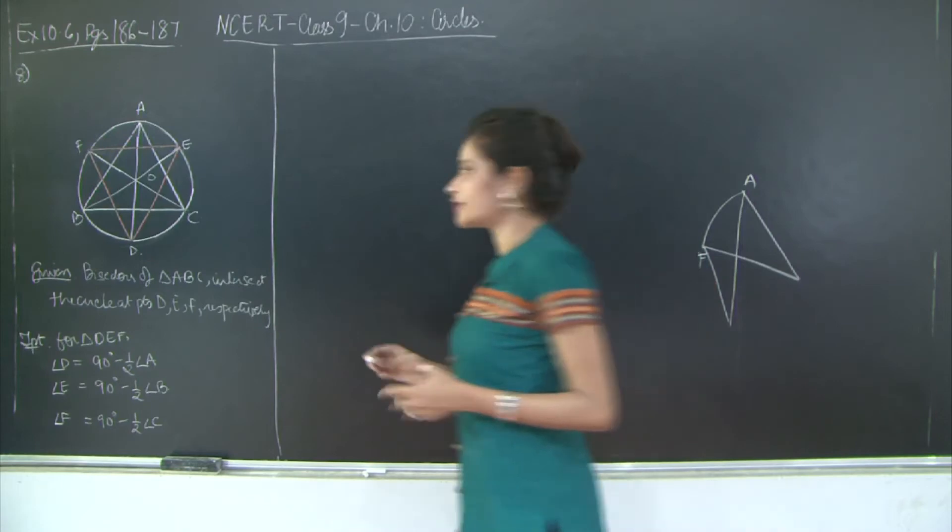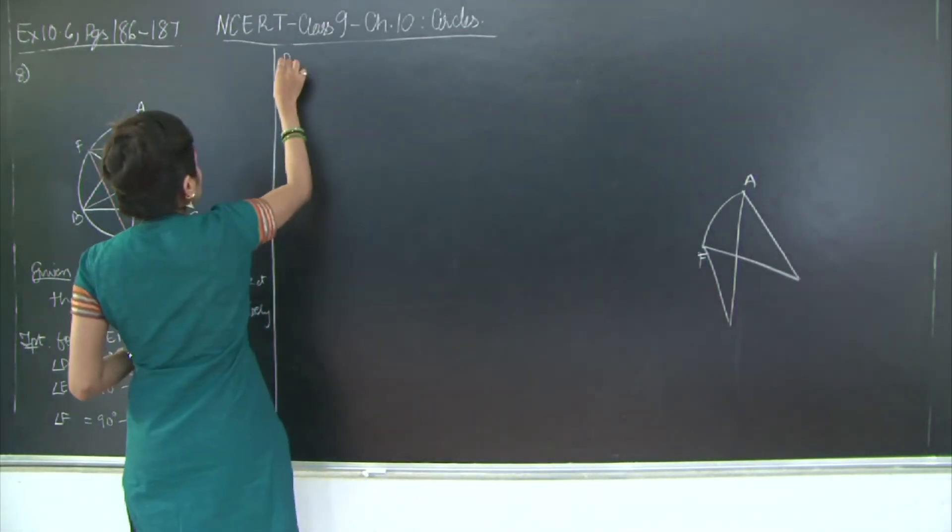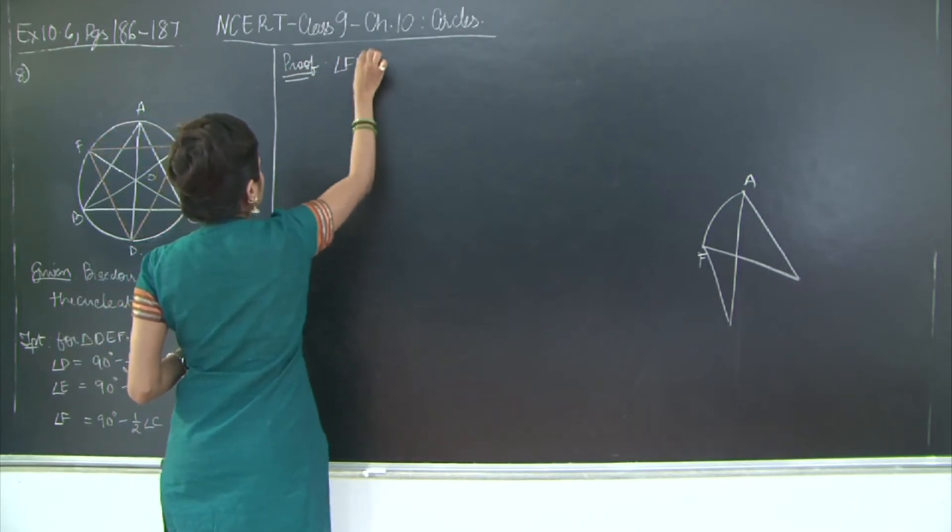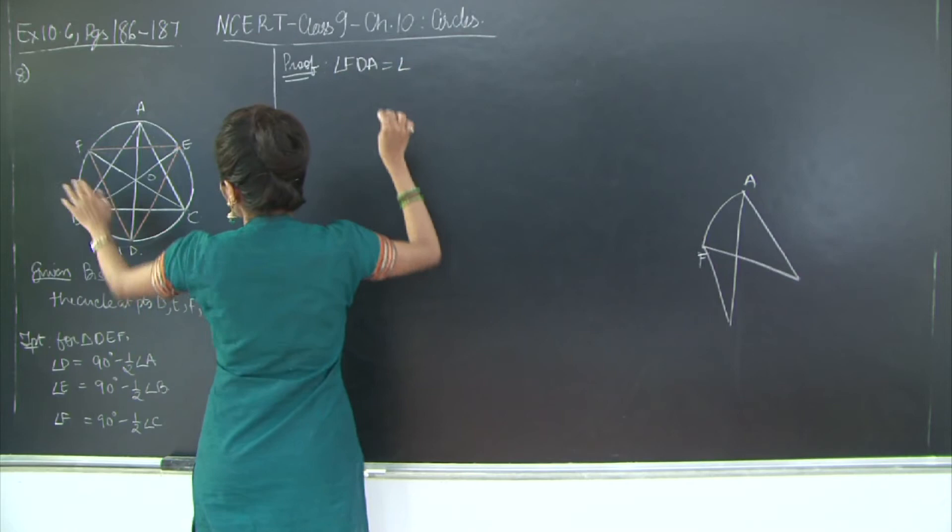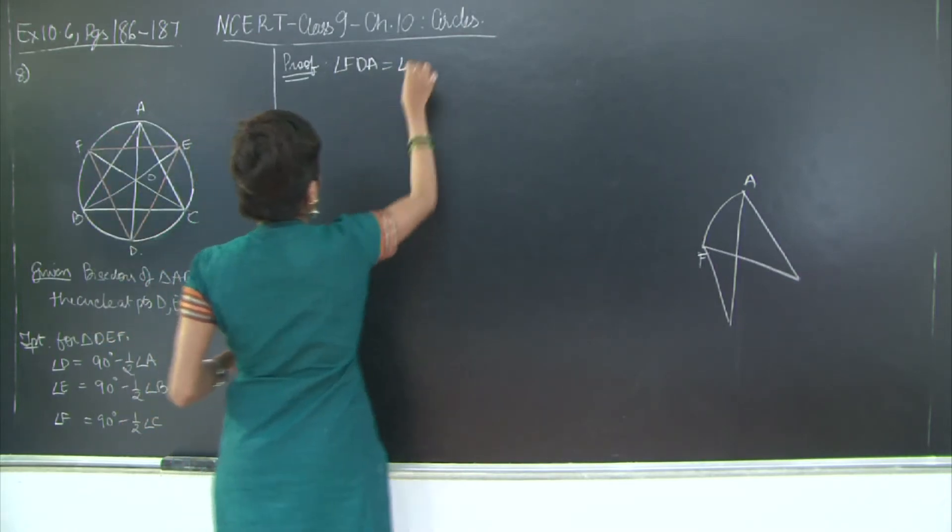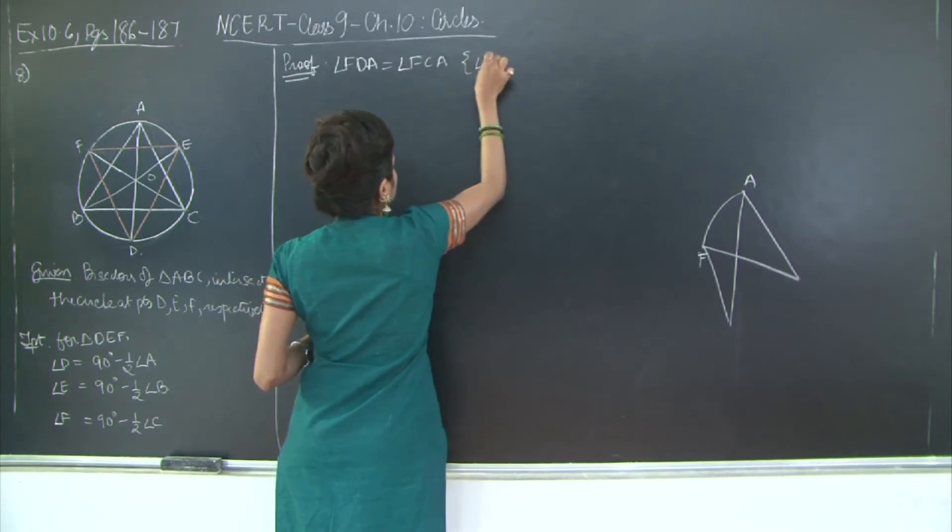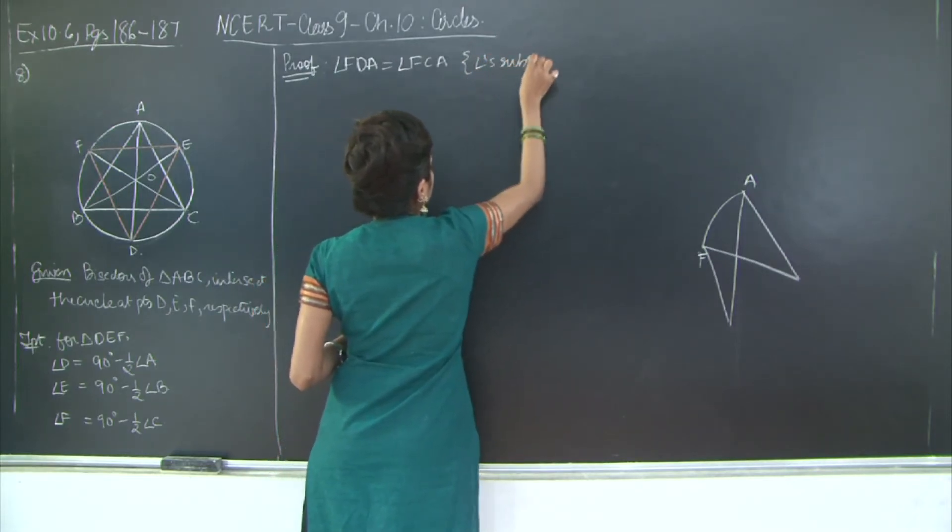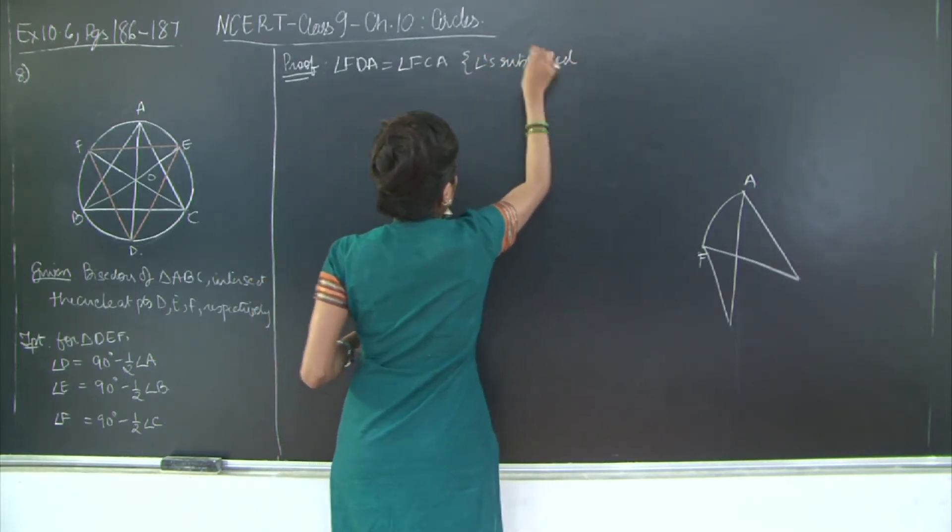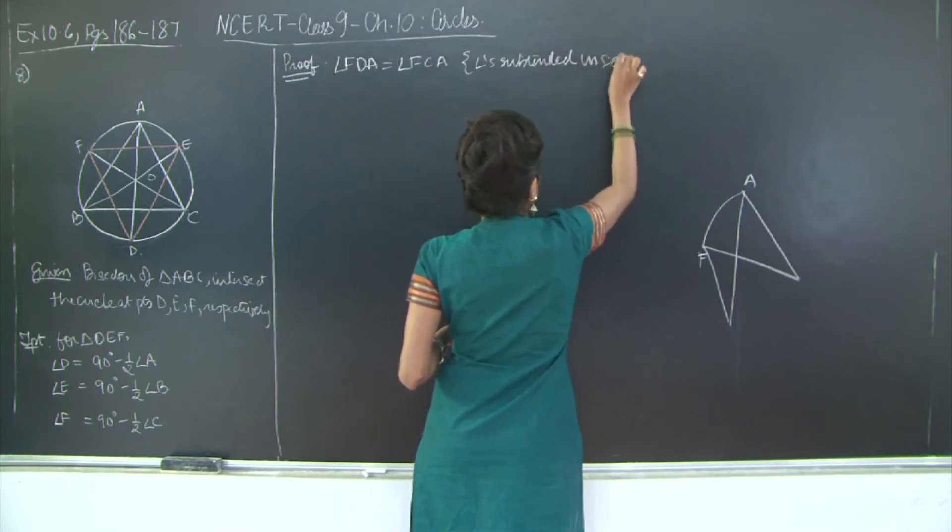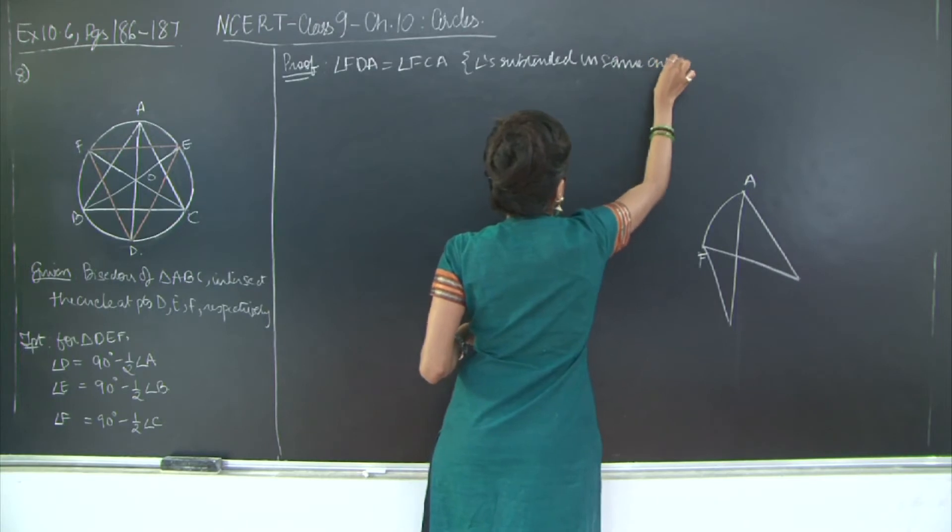Let's write this much then we will proceed further. So I will say proof: angle FDA is equal to angle FCA, angles subtended in same arc AF.